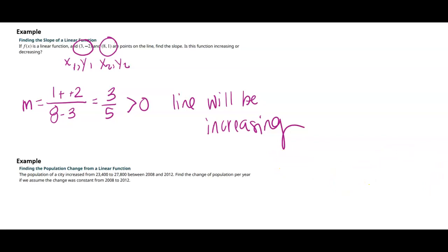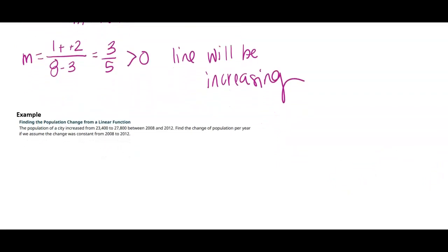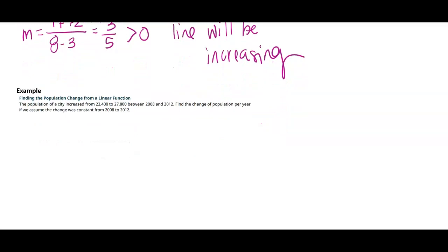Let's look at another application example. Say we know the population of a city increased between these two numbers, between these two years, and maybe that's the only two data points that I know. If we assume that rate of change is constant, then let's find this rate of change.